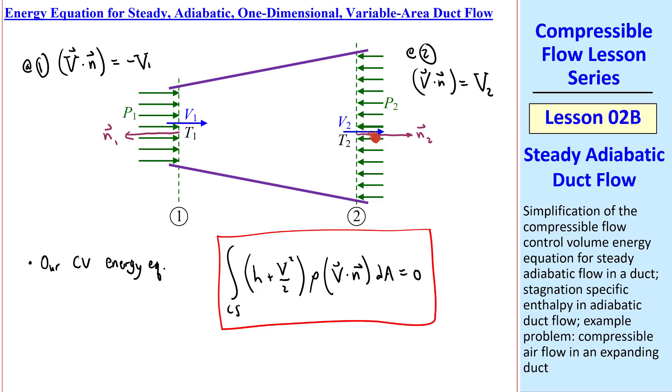If we take our control surface, slicing through the inlet and outlet and along the walls, so we have an entire closed surface, v dot n in this equation is 0 along the walls. So the only contributions come from the inlet and the outlet when we integrate over the control surface.